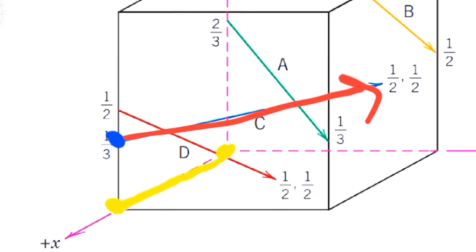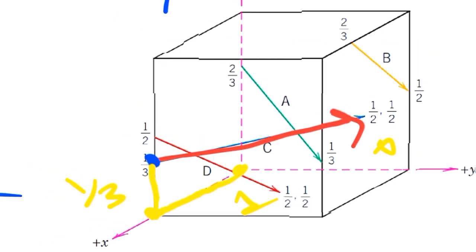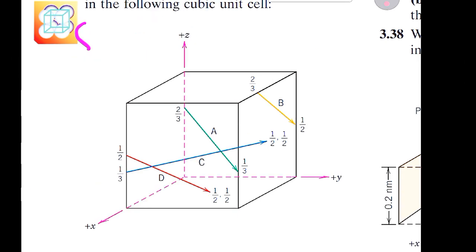Starting from the origin, we move one unit along the positive x direction to reach the far corner of the unit cell. Then we move one-third unit along the positive z direction to reach the tail point — this value of one-third was given to us. We don't need to move along y, so the y coordinate is zero. The tail coordinates are therefore (1, 0, 1/3).